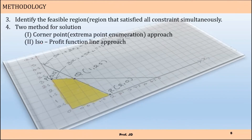The next task is to identify the feasible region. Once you plot all the constraints, you will get an idea of the feasible region — the region that satisfies all the constraints. At this point you have two methods to find the optimal solution: the corner point approach, also known as the extreme point enumeration method, and the isoprofit function line approach.